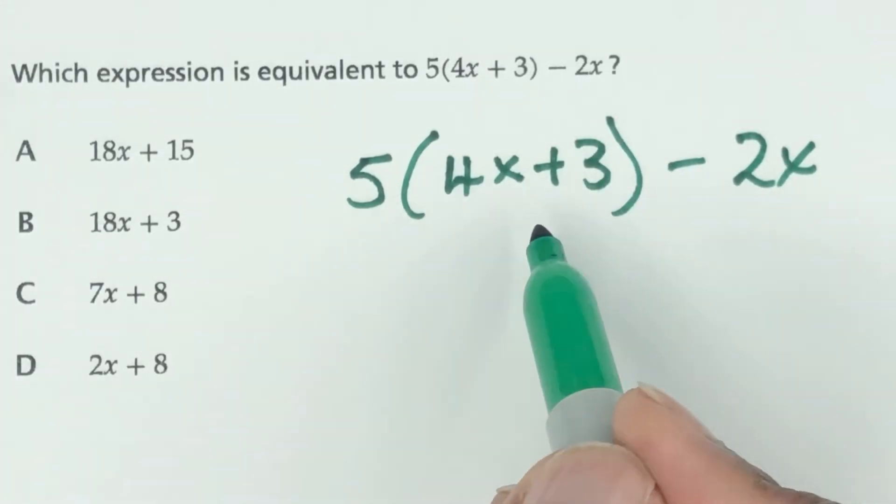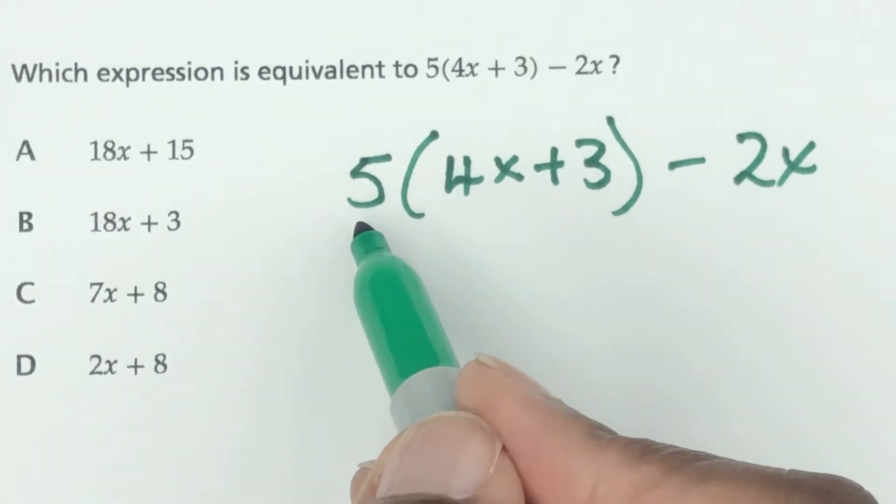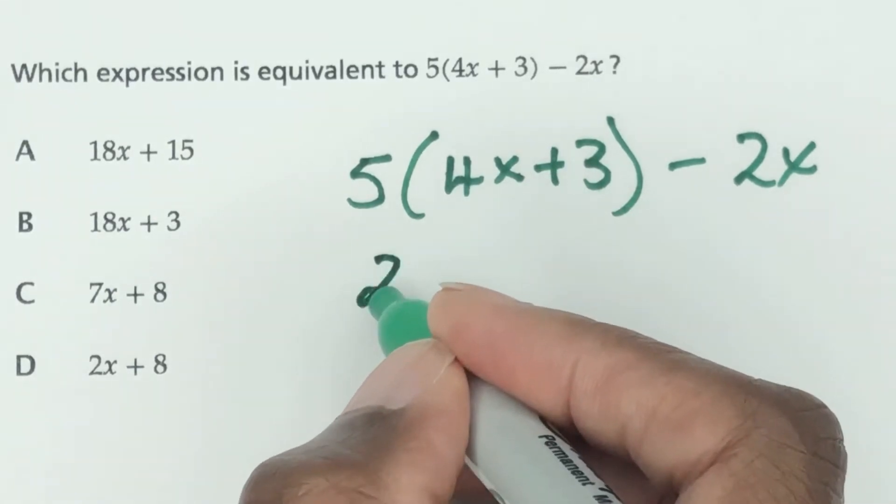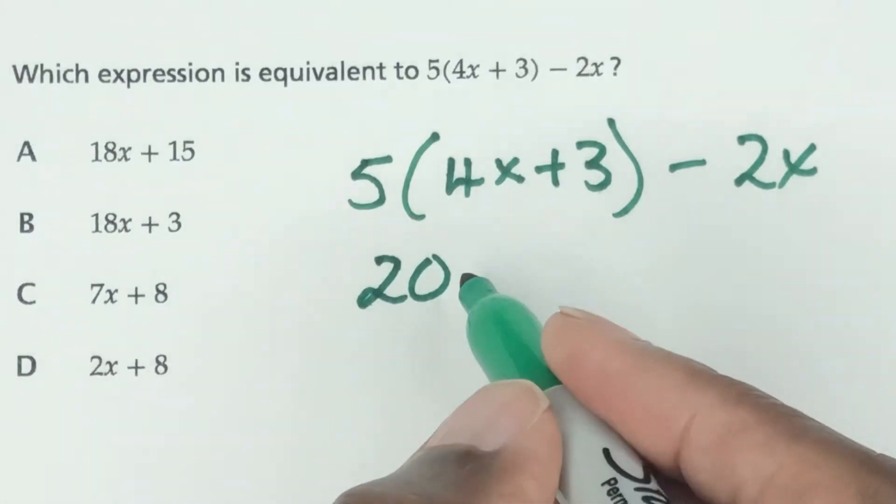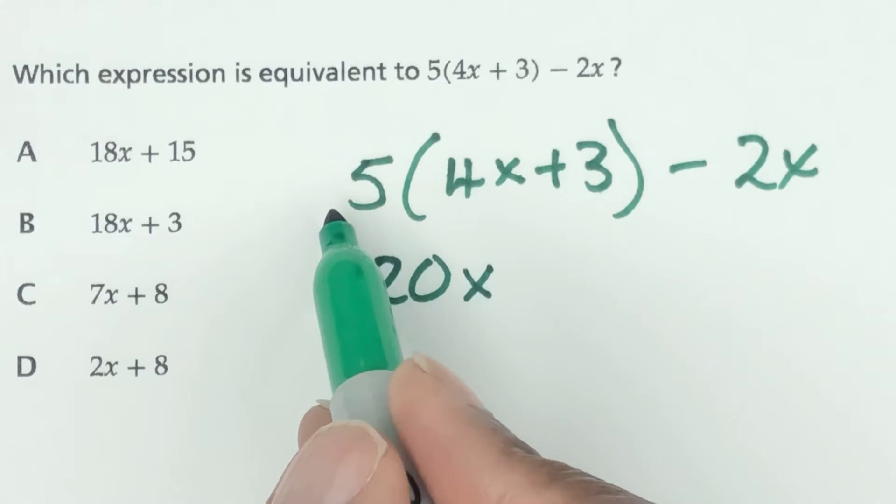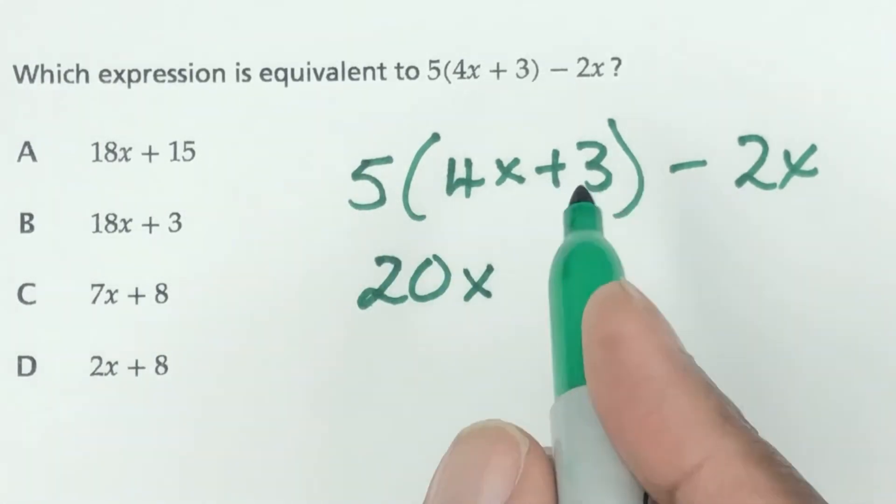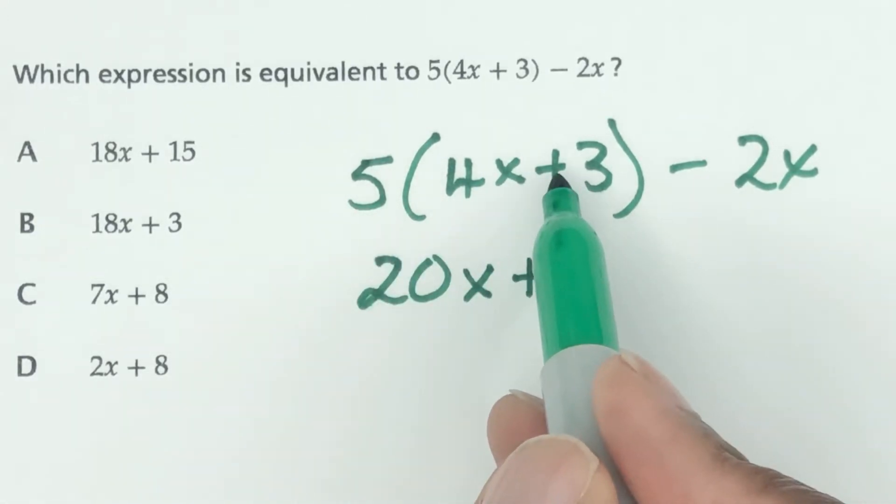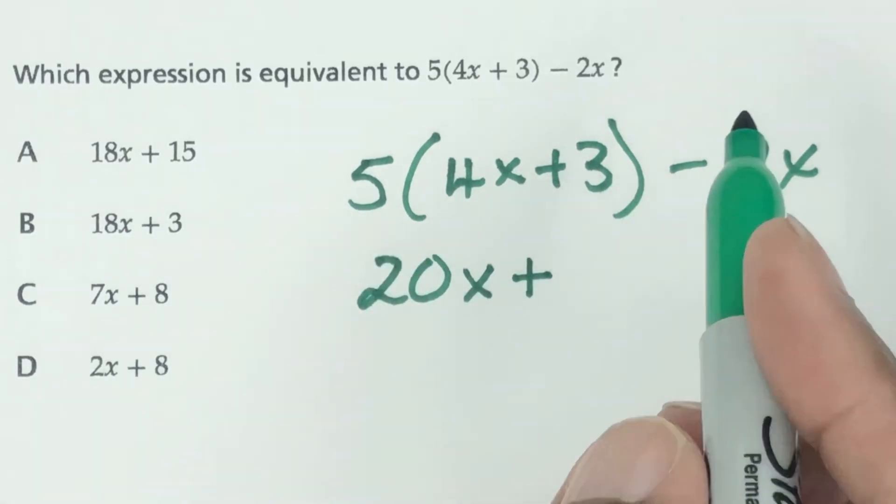To get rid of these brackets you multiply the 5 by the 4x plus 3. So 5 times 4, that's 20x. It comes with a variable, 20x plus, a plus sign multiplied by a plus sign is still a plus, and then 5 times 3 is 15.